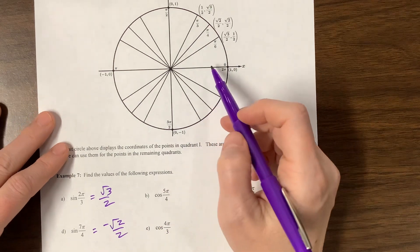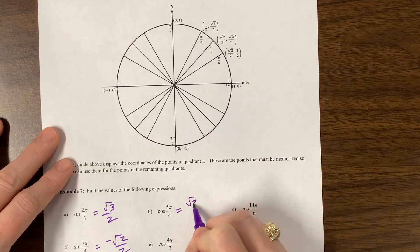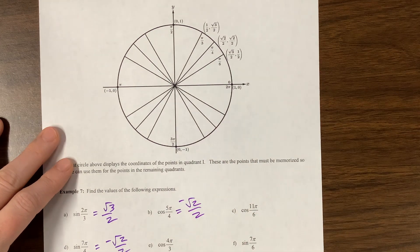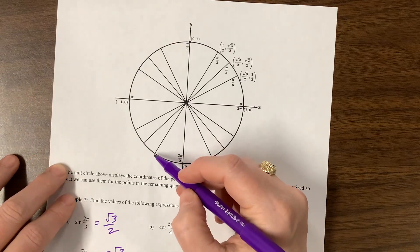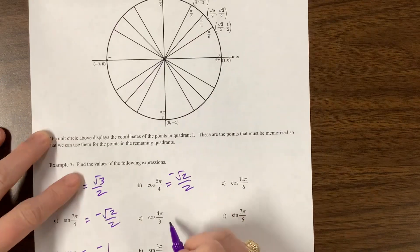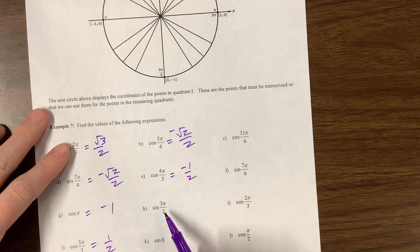Cosine of 5 pi over 4. Here's 5 pi over 4. Cosine is the x. We went in the negative, and it's the root 2 over 2. I forgot to write the negative. There it is. Cosine of 4 pi over 3. 4 pi over 3 is right here. Cosine is the x. It's negative 1 half.